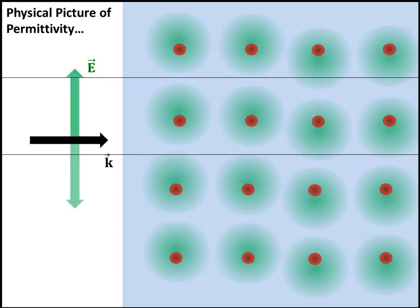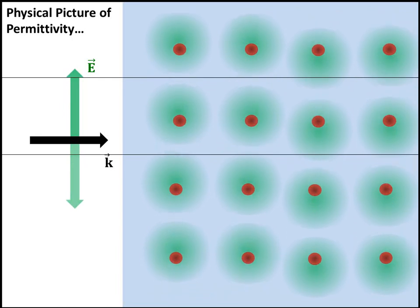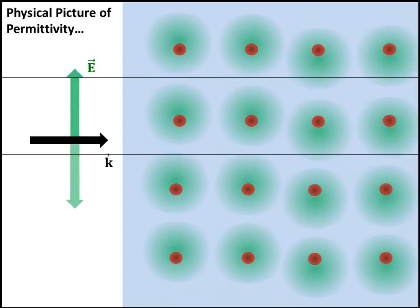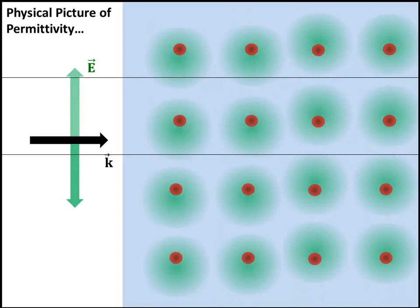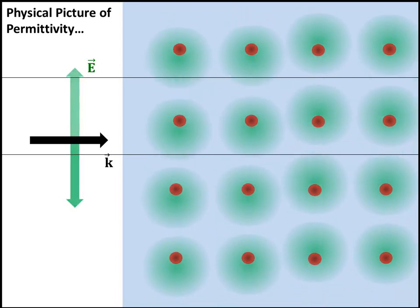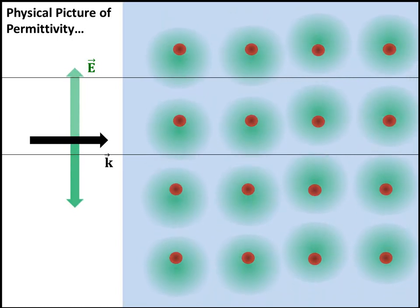The details of this interaction are beyond the scope of these lectures, but we would expect that because electrons are charges allowed to move a little bit in the material, there's going to be some kind of interaction between the propagating plane wave, the electric field, and the material itself. We can explain this mathematically pretty straightforwardly.